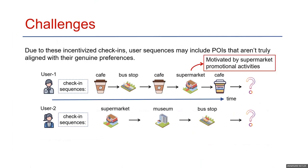POI sequence recommendation still faces several challenges. For example, users might check in at POIs they are not genuinely interested in due to external factors, like promotional activities. As shown in the figure, user1 may not like the supermarket as a POI, but leaves a check-in because he can get a discount by checking in. Filtering out noise and non-preferred interests from check-in data to make more accurate recommendations presents a significant challenge.